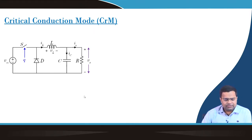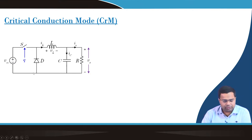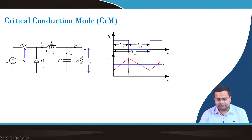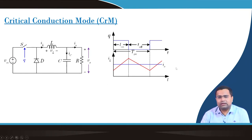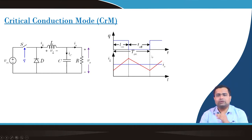We are considering a conventional buck converter where we have replaced the low-side MOSFET by a diode. Now the current cannot go in the negative direction because the diode will get reverse biased. When the load current is relatively high, if we choose a set of on time and off time, the converter will operate in continuous conduction mode.